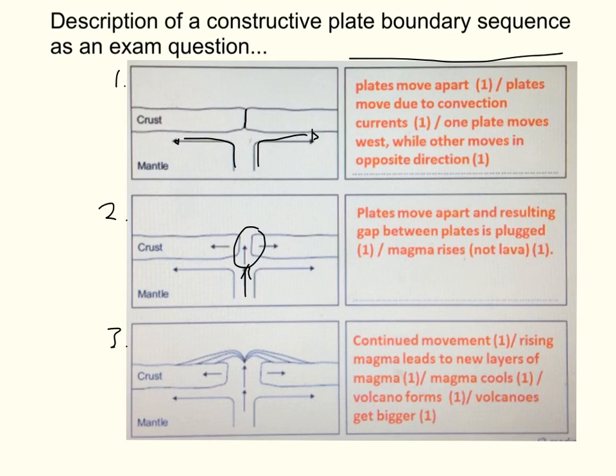In diagram three, spotting the difference between two and three, you can see that we have got layers of lava that have built up. And they've made this shield volcano, this nice rounded, low, flat peaked volcano. So for our statement that we put, we've got continued movement would get a mark because we can see that the gap has actually got larger. Rising magma leads to new layers of magma. So our arrow is still going up. Magma has cooled down. The volcano has formed, or the volcano has got bigger. So when you get a question like this, just look very carefully at the diagrams and work out what you could say about the diagram, and you'll be able to get credit for it.